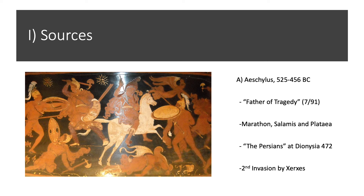The sources for the first Persian invasion are rather limited. We do have some idea of what happens from Aeschylus, but Aeschylus was a dramatist who produced tragedies — he's known as the father of tragedy. We know Aeschylus produced over 91 plays, but only seven survive. He does not actually produce a surviving play about Marathon, which is unfortunate because he would have been an eyewitness — he actually fought at Marathon, as well as at the later battles of Salamis and Plataea, showing the overlap between intellectual life and military service.